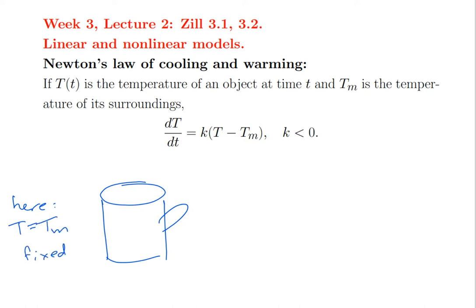Tm is the fixed temperature outside. Inside, the temperature is changing. The idea is: if the temperature of the coffee is hotter than the outside temperature, the coffee will cool down. The crucial thing is that the rate of change of temperature is proportional to the temperature difference. This makes sense because if the temperature equals the outside temperature — no temperature difference — then it wouldn't heat up or cool down. If you've got a big temperature difference, you cool down more quickly, and the rate of cooling is proportional to the temperature difference.